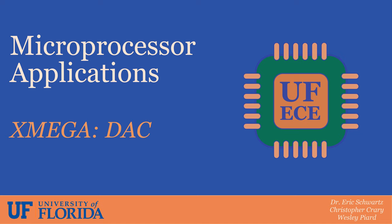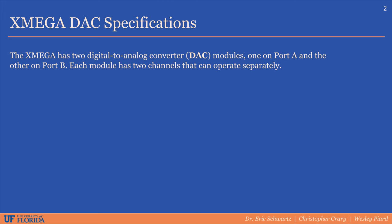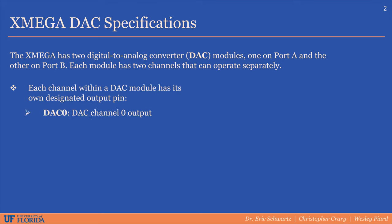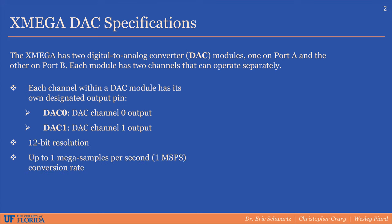Hey, my name is Wes and in this presentation I'm going to be going over the digital to analog converter system within the ATX Mega 128A1U microcontroller. The XMega has two digital to analog converter, or DAC, modules — one on port A, one on port B. Each of these modules has two separate channels that can operate independently, each with its own output pin labeled DAC0 and DAC1. The DAC has a 12-bit resolution and is capable of converting data at up to one mega samples per second.